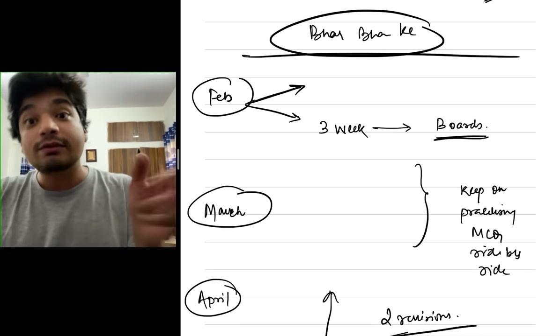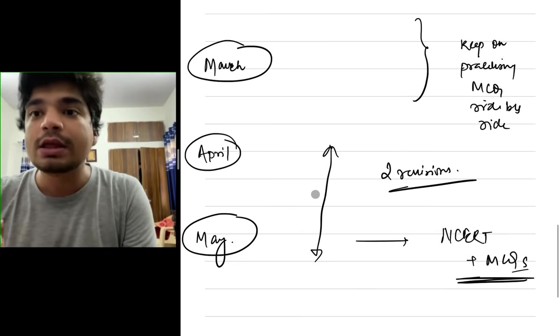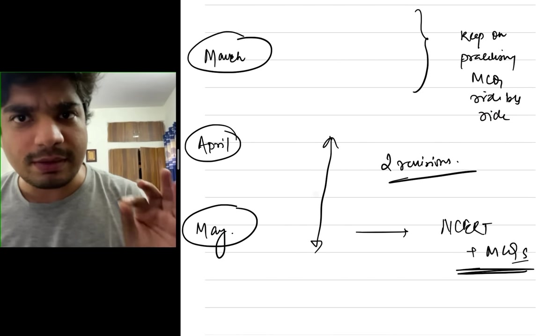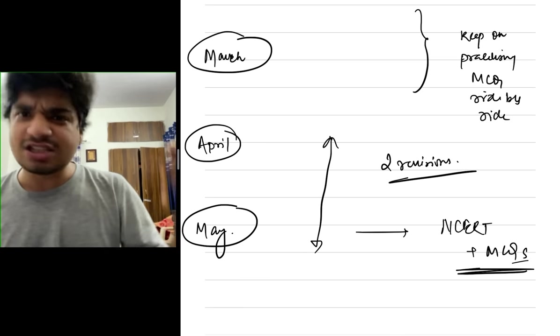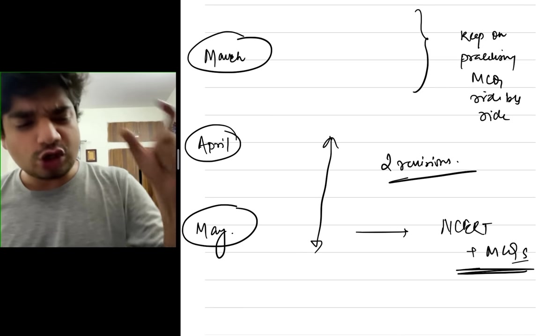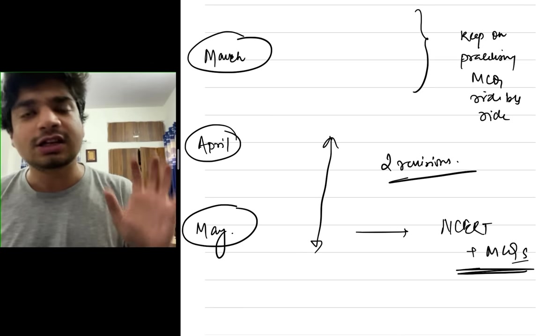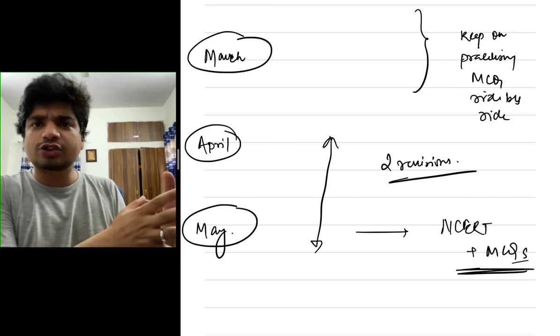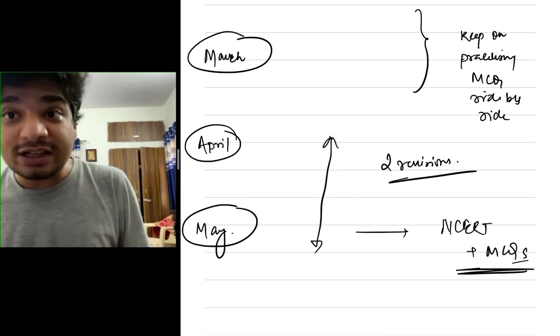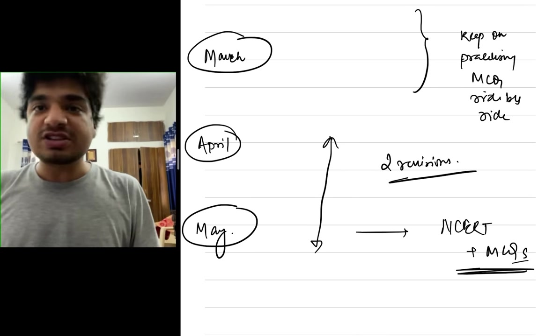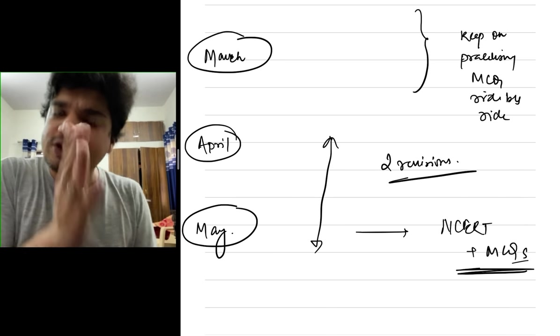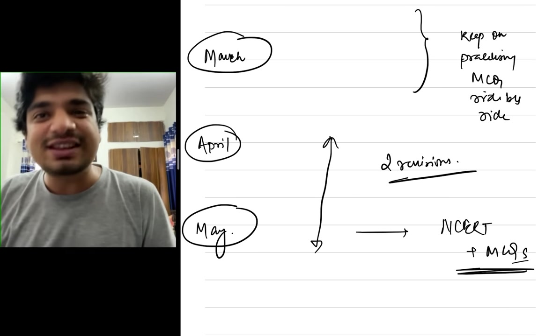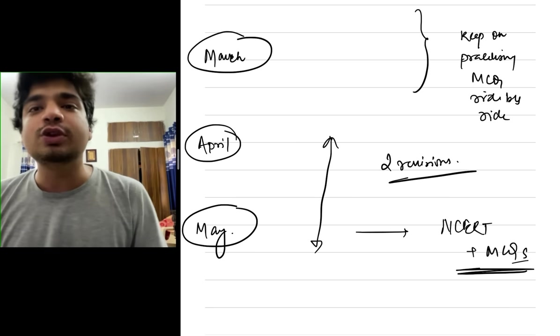Now comes April and May. You have done your 12th until November end, you have done your bio 11th NCERT, you have done your physics and chemistry until January end. For the board preparation then you again did your 12th. If you keep on practicing MCQs then in April and May you have to do 2 revisions. In the 11th and the 12th you have to do 3 revisions.